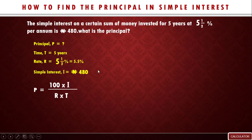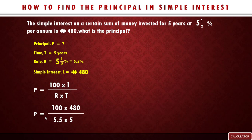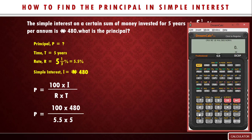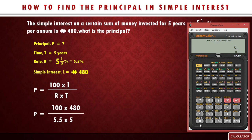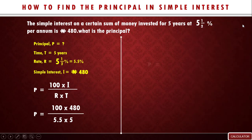Let's substitute the given values into the formula. We have P = 100 times 480, all over 5.5 times 5. Using our calculator: 100 multiplied by 480 gives us 48,000. On the denominator side, 5.5 times 5 equals 27.5. So our principal will be 48,000 over 27.5.